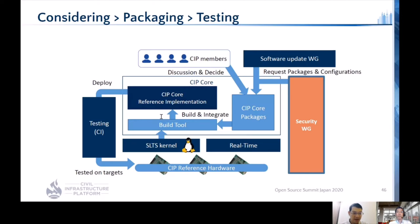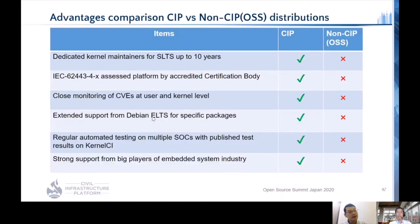In this way, if the hardware, kernel, or even core packages running in user space conform to the security requirements of the IEC 62443 standard, this can be said to be the best platform for user product development to complete certification. In CIP projects, we maintain the super long-term kernel up to 10 years, perform IEC 62443 certification, and monitor CVEs in the CIP kernel.